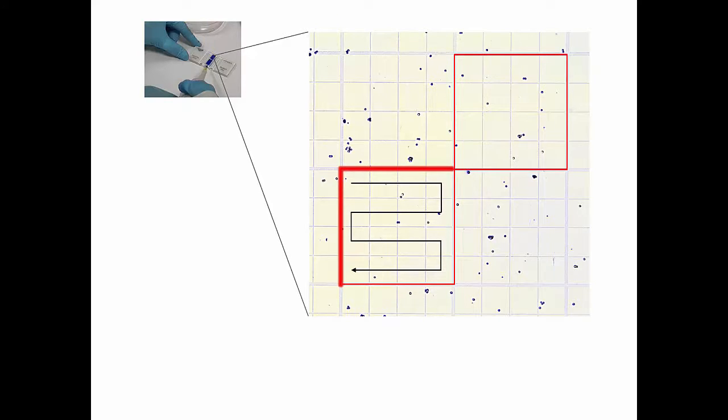Cells touching the lower and right limits should not be taken into account. Count the live and dead cells in five 1 mm² rectangles of the counting chamber. For calculation you will need to combine the counting results from all five squares. For greater accuracy in the measurement additional squares of the counting chamber can also be counted.